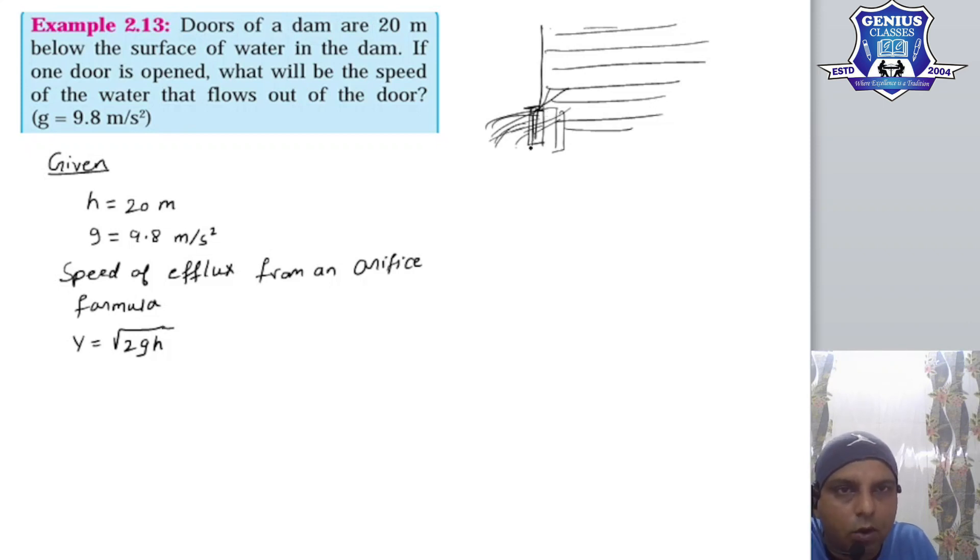This is a small door. It is open. This is a small opening. When the water flows, we will find the speed. So, this is the orifice. The speed of efflux from an orifice, we have a formula: v equals under root 2gh. We will solve using this formula. This orifice velocity, we will find out how much water flows from the door. So, we will solve this.